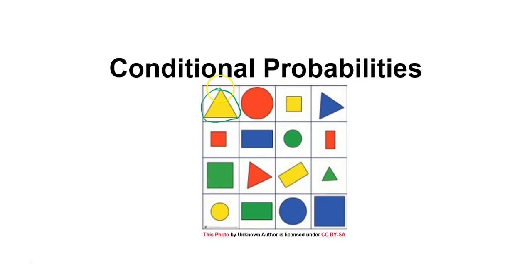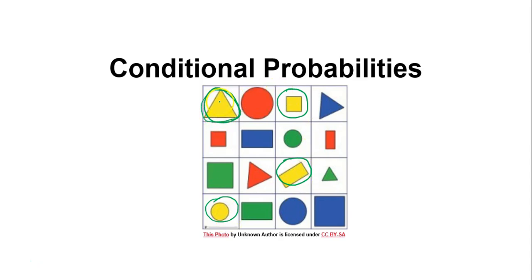Now what if I told you to find the probability that you get a triangle given that the shape is yellow? That's what a conditional probability is. That means you're literally going to take your sample space and restrict it to the condition — in this case, yellow shapes. Out of the 4 yellow shapes, only 1 is a triangle, so 1 out of 4.